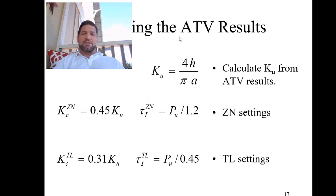So the way that we use the ATV results is first we calculate the ultimate gain. So KU is going to equal 4H, which is the change in the controller, divided by π A. A was the amplitude of the oscillations. And then based on this we can calculate the value of the gain and the τI using these terms. The period of oscillation which is shown on the previous slide and KU which is calculated here.